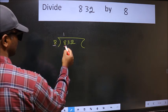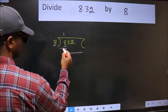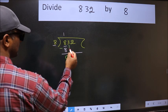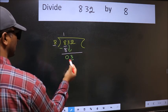8 times 1 equals 8. Now we should subtract. We get 0. After this, bring down the beside number, 3, down. Now here we have 3.